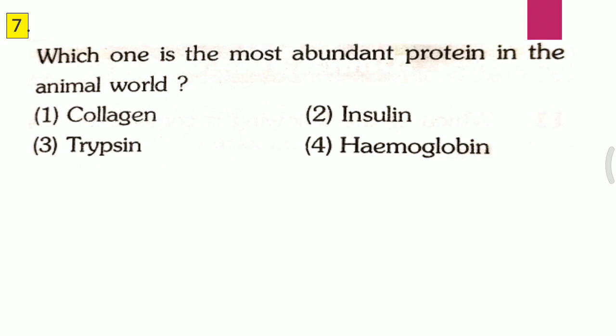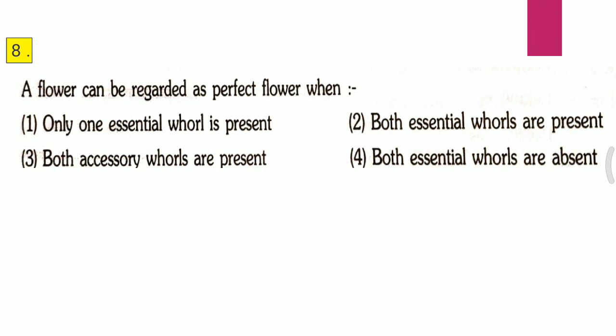Question seven: Which one is the most abundant protein in the animal world? First, collagen; second, insulin; third, trypsin; fourth, hemoglobin. The correct answer is the first one, that is collagen.